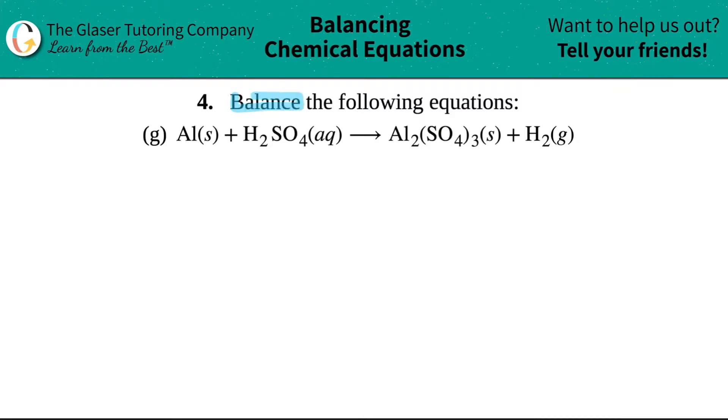Number four, balance the following equations, and then we have letter G in this packet. We have Al solid, so aluminum solid, plus sulfuric acid H₂SO₄ aqueous, plus aluminum sulfate Al₂(SO₄)₃, and then hydrogen gas.